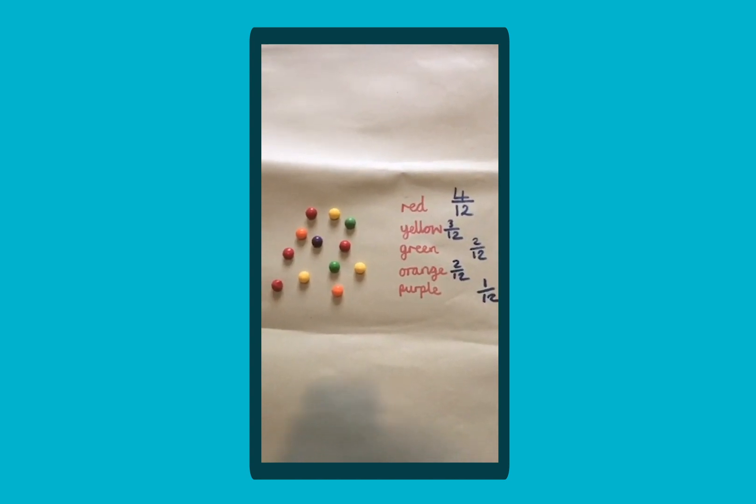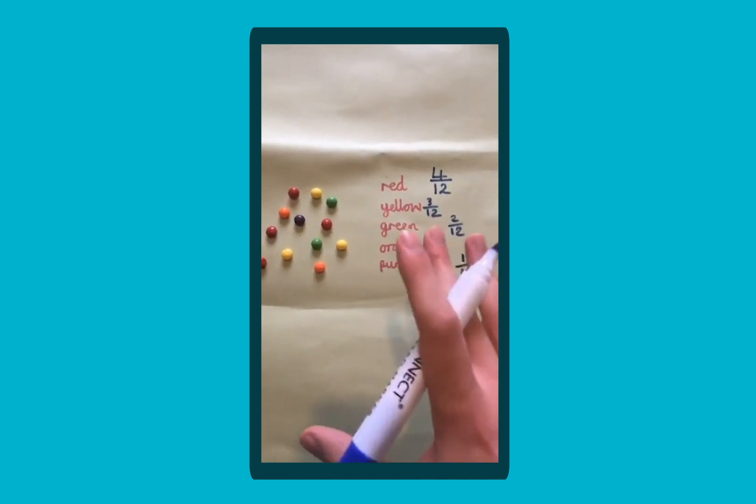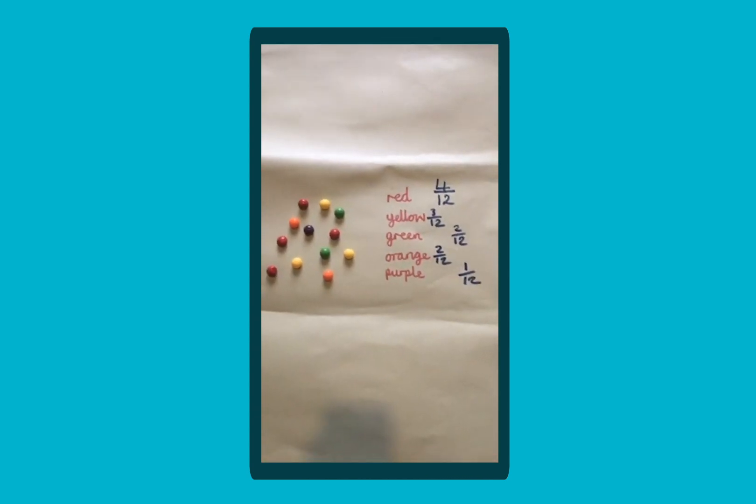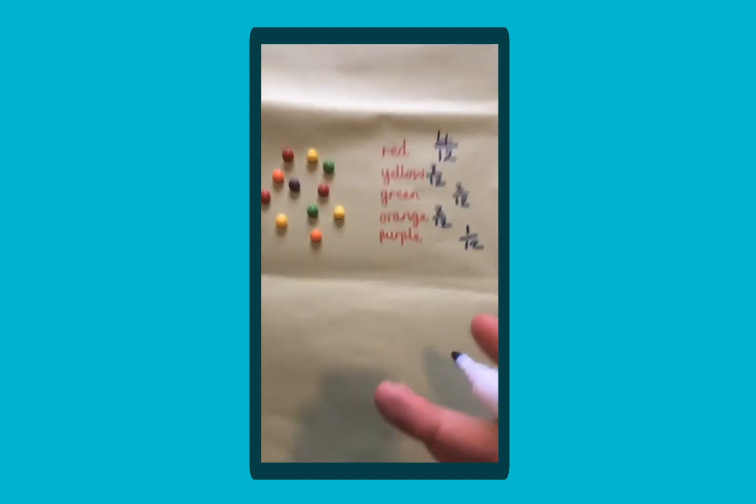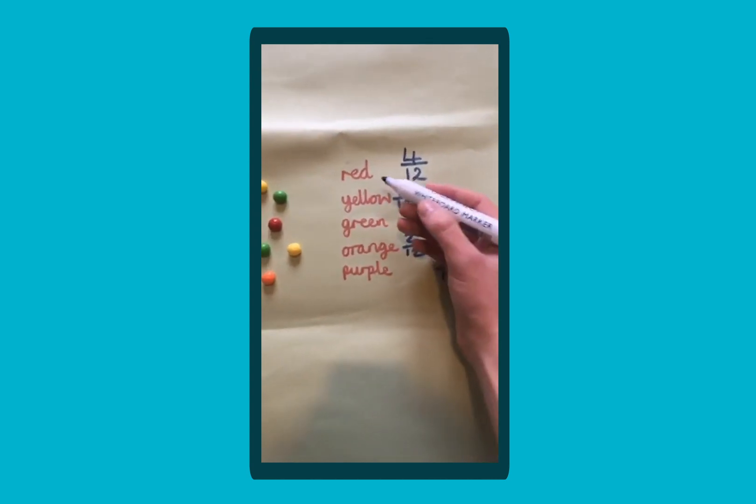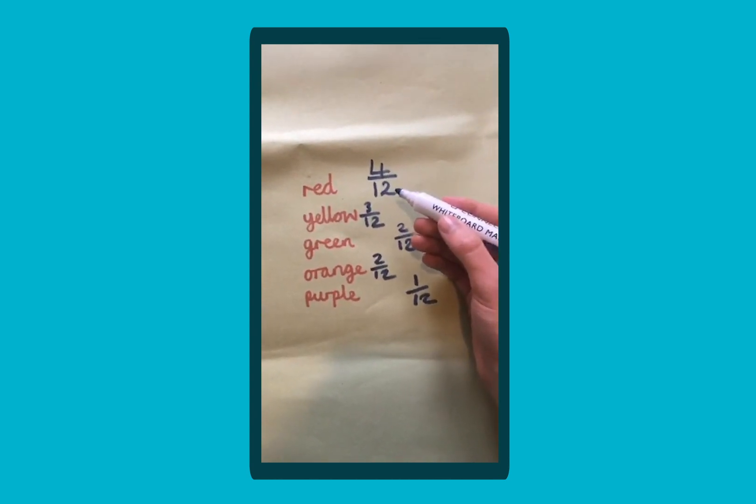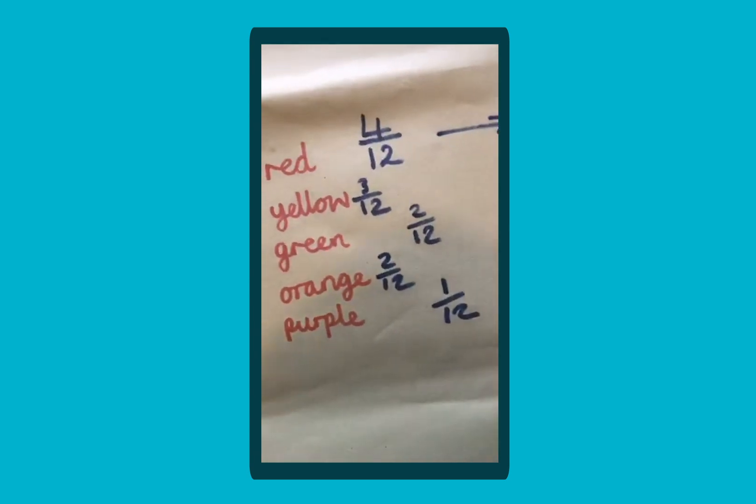So once you've got that information, you can do a whole lot of activities around that data you've got. For instance, you could simplify your fractions, especially useful for all the children, maybe year five, year six. So for instance, in red we have four twelfths of my sweets are red, so you could simplify that, so that's making it its simplest form.